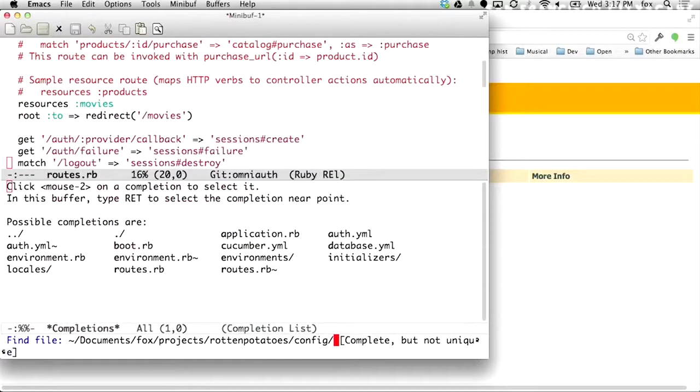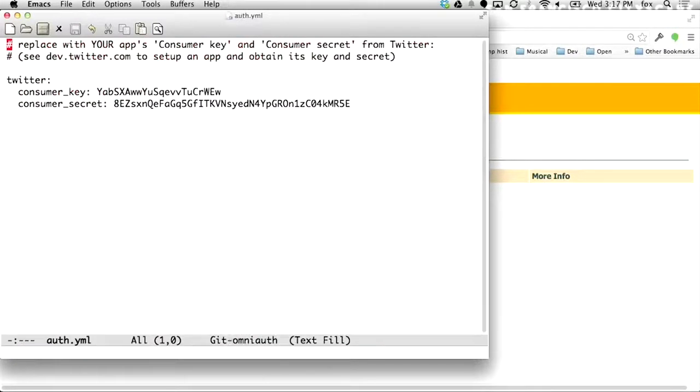In our case, it's Twitter. And there's another config file whose name I forget. There it is, auth.yaml. There we go. I guess I'll be changing my consumer key and consumer secret now that they're on the screen and therefore on the internet.